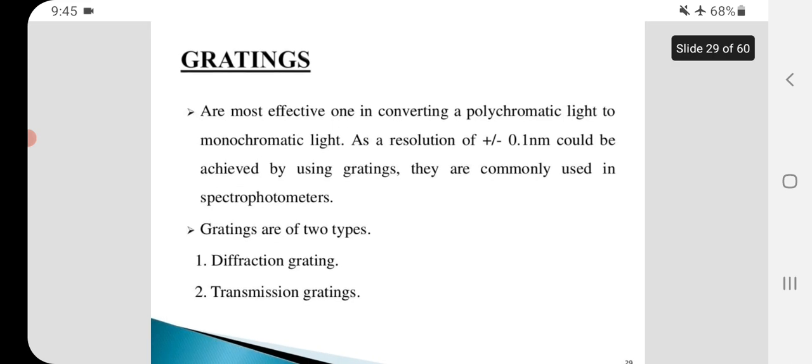Gratings are the most effective in converting polychromatic light to monochromatic light as a resolution of plus or minus 0.1 nanometer could be achieved by using gratings. They are commonly used in spectrophotometers.